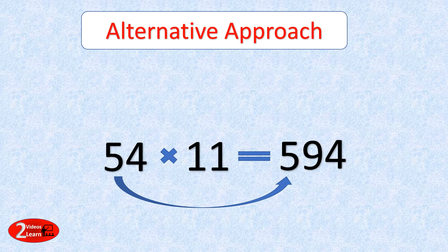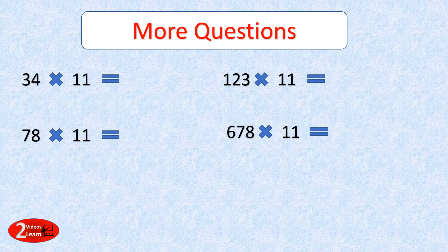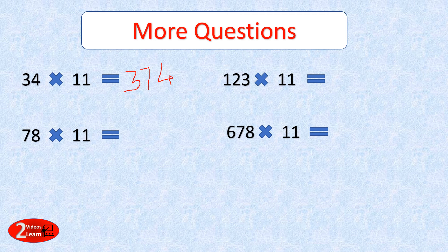Now let's see a few more questions. You can pause for a moment and find out the answers using the alternative approach we just discussed. For the first example — 34 by 11 — I write 4 as the ones place digit, 3 plus 4 is 7 as the tens digit, and as there is no carry forward I write 3 as the hundreds place digit. So the answer is 374.